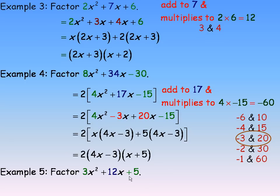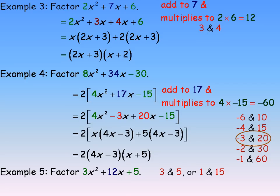Last example. You notice there's not much room here, because this actually isn't factorable. You would look for two numbers that add to 12 and multiply to 15. The only factors of 15 are 3 and 5, or 1 and 15. Everything's positive, so no negatives to worry about. None of these pairs add to 12: 3 and 5 add to 8, not 12, and 1 and 15 add to 16, not 12. If there are no numbers that multiply to 15 and add to 12, you cannot factor this — this trinomial will not factor.